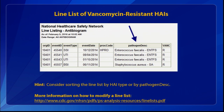Here is the output: a line list of vancomycin-resistant HAIs. The pathogen description pulls any pathogen resistant to vancomycin — here we have three Enterococcus faecalis and one Staph aureus. The event types and dates are different because we didn't make additional specifications. You can consider sorting the line list by HAI type or by pathogen for better organization.